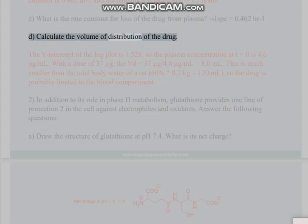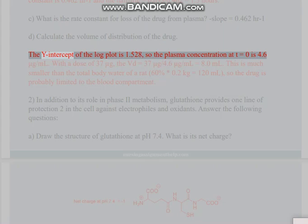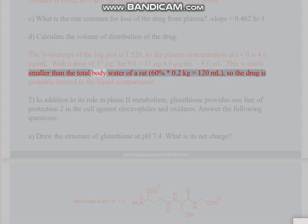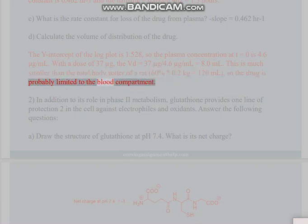Part D: Calculate the volume of distribution of the drug. The y-intercept of the log plot is 1.528, so the plasma concentration at t=0 is 4.6 μg/ml. With a dose of 37g, the VD equals 37g / 4.6 μg/ml equals 8.0 milliliters. This is much smaller than the total body water of a rat (60% × 0.2 kg = 120 ml), so the drug is probably limited to the blood compartment.